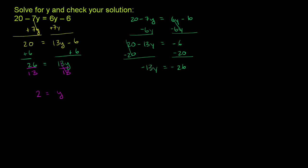Now I want to divide both sides of this equation by negative 13. So I want to divide both sides of this equation by negative 13. And what do I get? Negative 13 times something divided by negative 13 is just that something. I just get a y. And then negative 26 divided by negative 13 is 2.